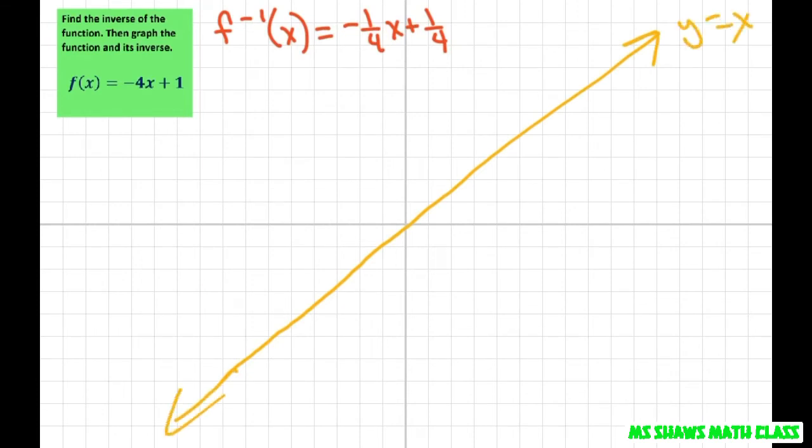So let's graph the first one. The y intercept is 1. The slope is negative 4. So I'm going to go up 4. 1, 2, 3, 4 to the right one. Down 4. 1, 2, 3, 4 to the left one.